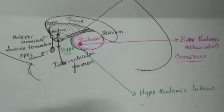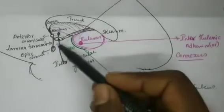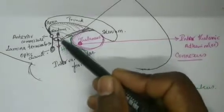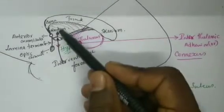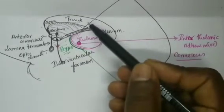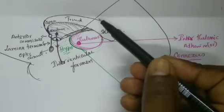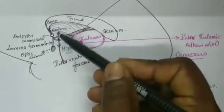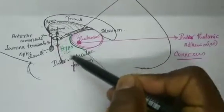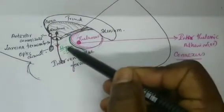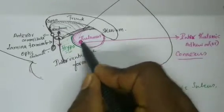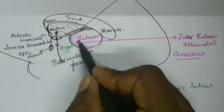The region between the thalamus and the hypothalamus on either side is called the third ventricle. Behind the septum pellucidum we have the lateral ventricles, which communicate through the interventricular foramen into the third ventricle. There is only one connection between the two thalami — the interthalamic adhesion or connexus.